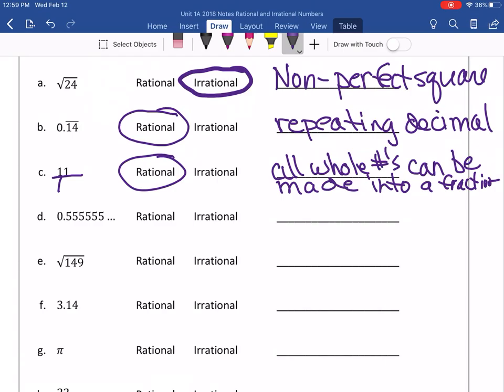Letter D. What kind of decimal is that? Even though it doesn't have the bar notation, it has the dot, dot, dot, which indicates it is a repeating decimal, and repeating decimals are rational. And so, just like we wrote up here, what's the reason? Because it is a repeating decimal.